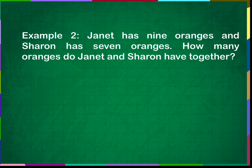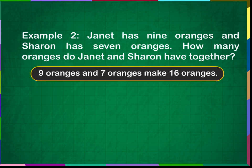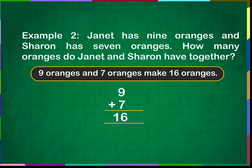Example 2: Janet has 9 oranges and Sharon has 7 oranges. How many oranges do Janet and Sharon have together? 9 oranges and 7 oranges make 16 oranges. 9 plus 7 is equal to 16. Janet and Sharon together have 16 oranges.